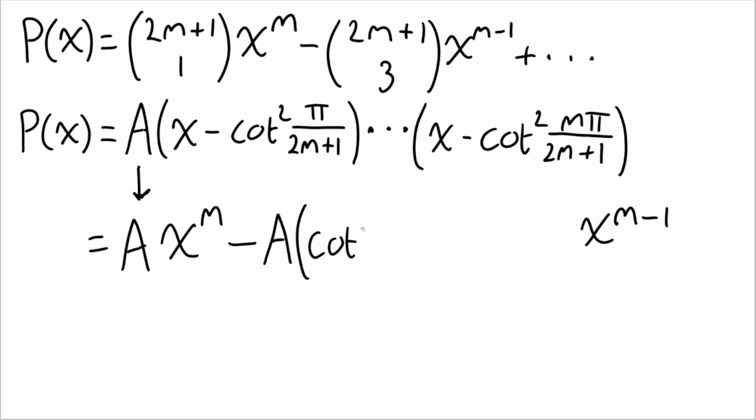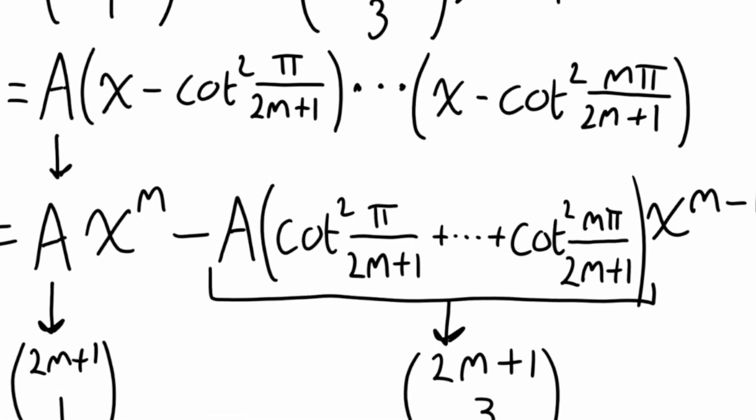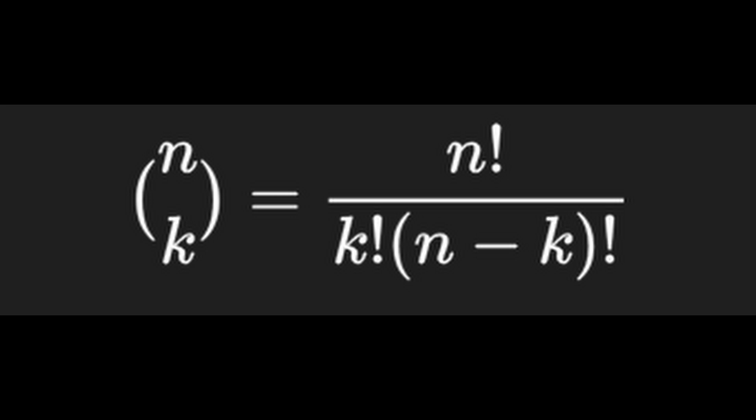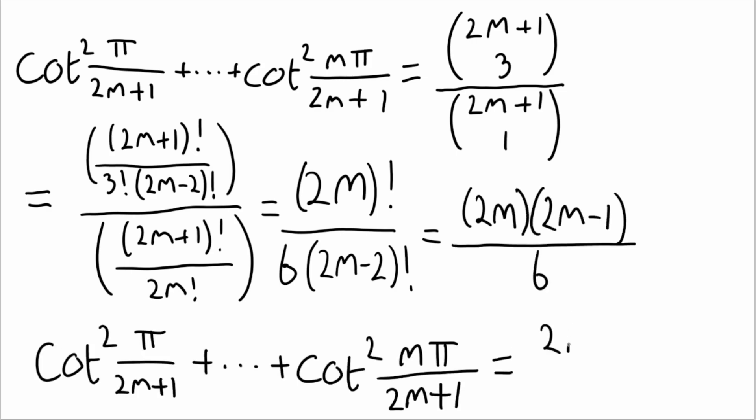Remember, though, we have this extra a term to contend with. Every term in the expanded polynomial has it as a factor. Since we know the full form of the polynomial, though, we know exactly what a is. 2m plus 1, choose 1. We also know that the coefficient of the x to the m minus 1 term is 2m plus 1, choose 3. And as we know from the expansion, that just so happens to be equal to a times the sum that we're looking for. Using a bit of algebra, we can rewrite our cotangent sum as 2m plus 1, choose 3, over 2m plus 1, choose 1. This is the formula for n choose k, and it's what we're going to use to simplify the result. Now with a bit of fraction division, cancellation, and factoring, we can ultimately write the sum as 2m squared minus m over 3.